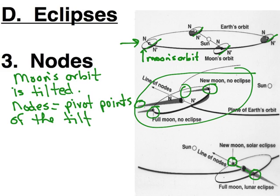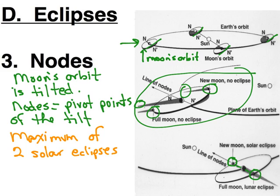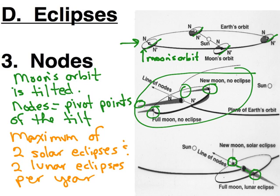If the full moon is on the node, then you have a chance for Earth's shadow to hit the moon. You can have a maximum of two solar eclipses and two lunar eclipses per year. Most of the time you don't get two of each, because not only does the moon need to be on the node, it needs to be the right phase as it's on the node. These two node positions are the two times in the year when you can get a lunar eclipse and a solar eclipse, but the moon needs to be the right phase and you need to be on the right part of the earth to see it, so it actually gets much more rare than that.